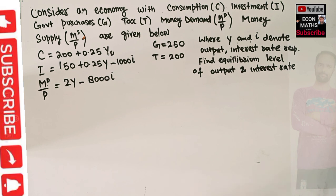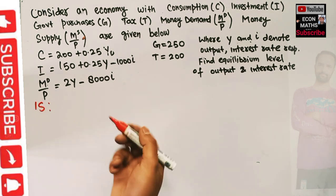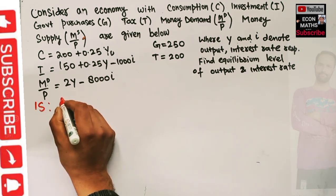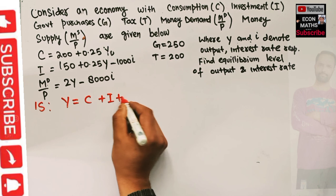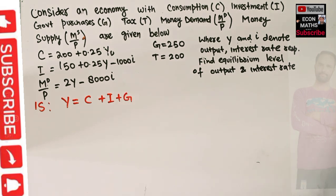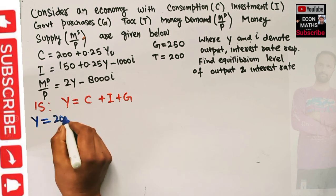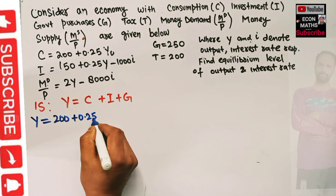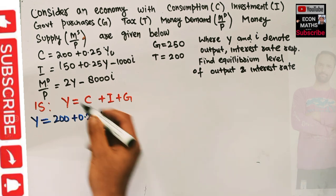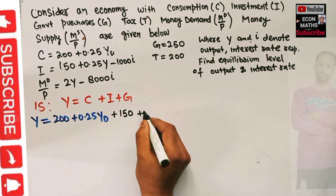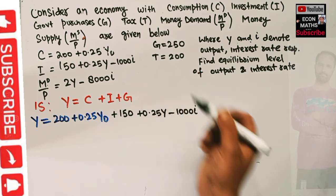First we need to find the IS equation. The IS curve is derived from the goods market equilibrium condition: total output Y should equal consumption expenditure plus investment expenditure plus government purchases. Our consumption function is C = 200 + 0.25 Y_D, investment function is I = 150 + 0.25Y - 1000i, and government purchases are 250.